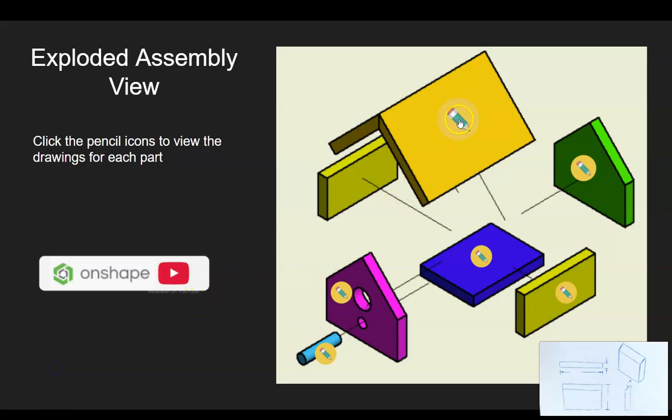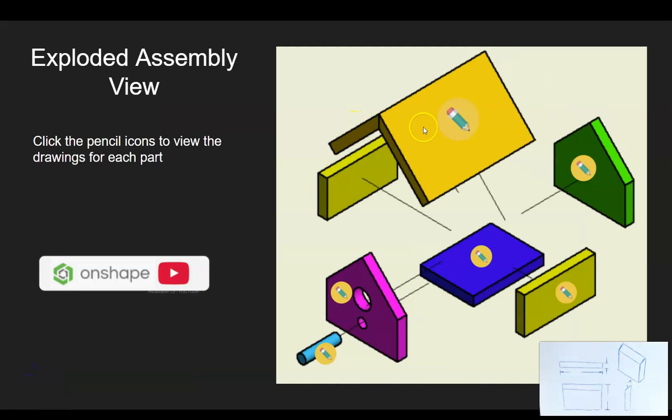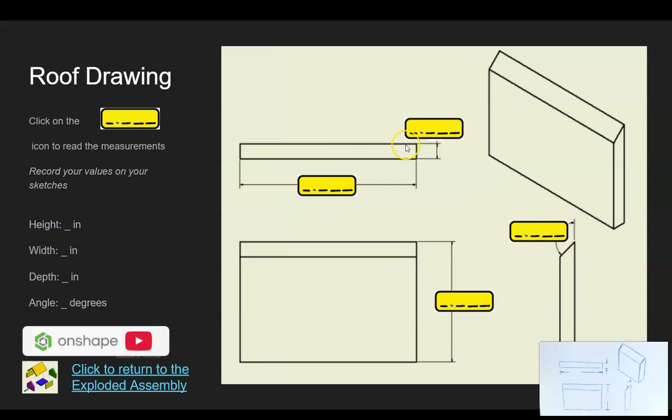Let's go ahead and do a part. The first part we're going to take a look at is the top of the roof. Here's the roof drawing. Remember there were two parts of the roof - the left roof and the right roof - and they're identical, so I only need one drawing for both roof halves.